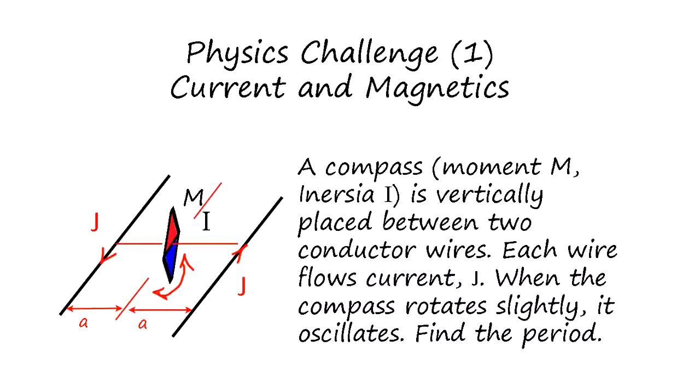Physics challenge one: current and magnetics. The current generates a magnetic field and we're examining the interaction between magnet and current. We have two wires, each wire has a current J.